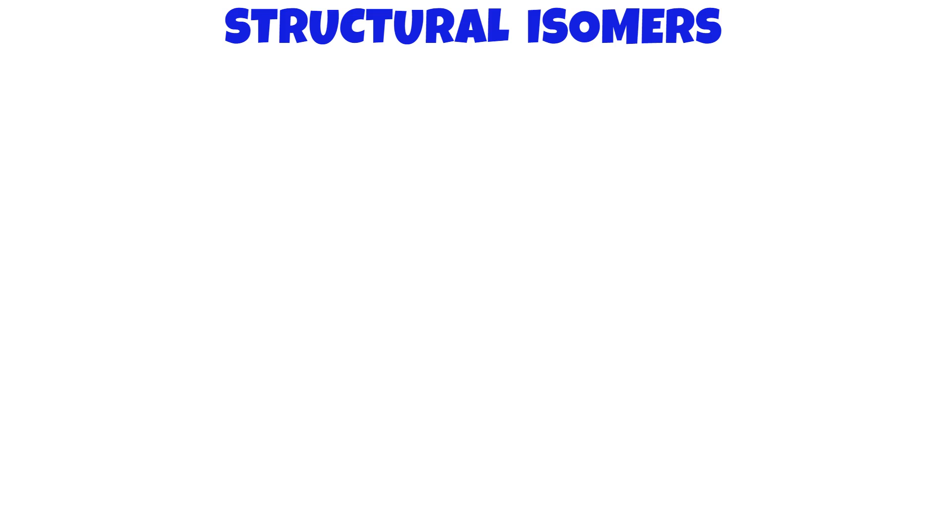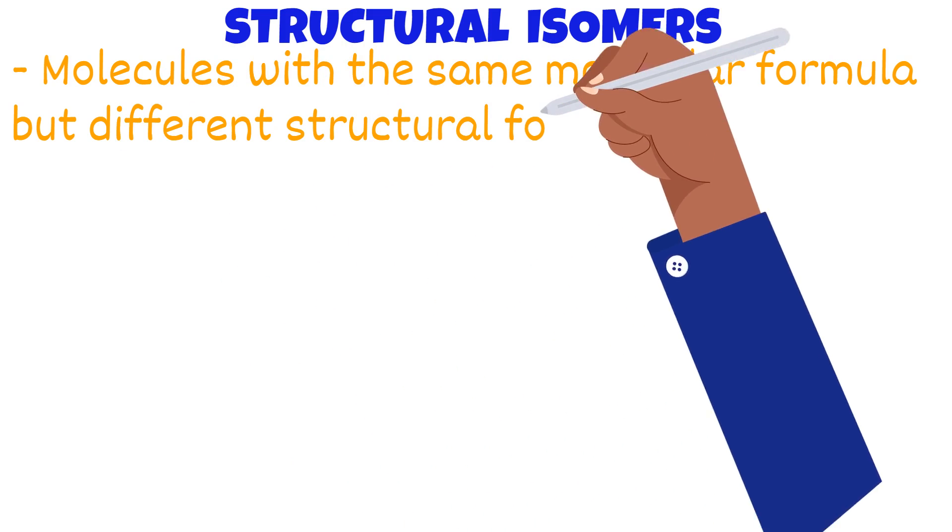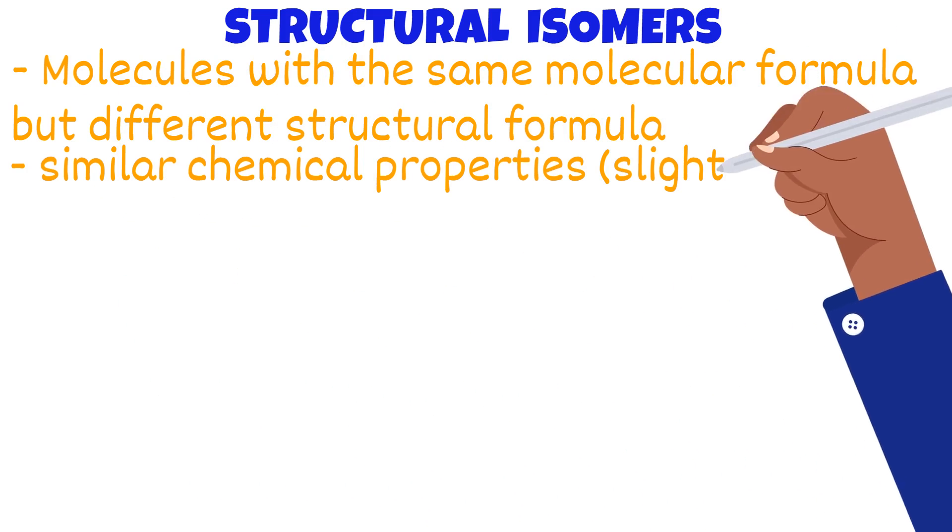What exactly is a structural isomer? A molecule with the same molecular formula but different structural formula. Isomers have similar chemical properties.